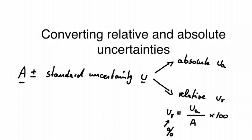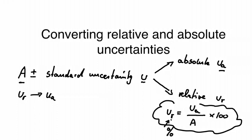So this is how we can convert from absolute uncertainty into relative uncertainty. And if we want to do the conversion the other way around from relative uncertainty into absolute uncertainty, all we need to do is simply take this equation here and rearrange it a little bit.